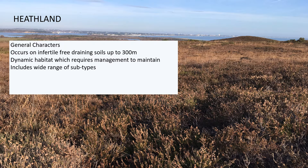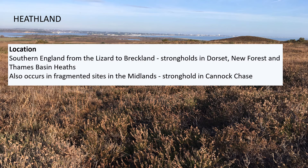Heathland includes a wide range of subtypes: shingle heath, dune heath, and maritime heath. If you've spent time in dunes, it's always a surprise to find heather growing in dune slacks. In terms of general location for lowland heath — southern England from the Lizard to the Breckland, with strongholds in Dorset, the New Forest, and the Thames Basin heaths, plus a good smattering in the Midlands, notably Cannock Chase. It's also well distributed in Wales in both upland and lowland forms.